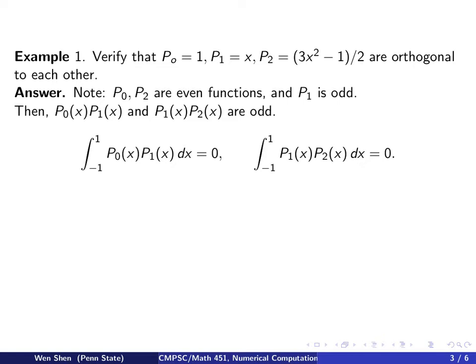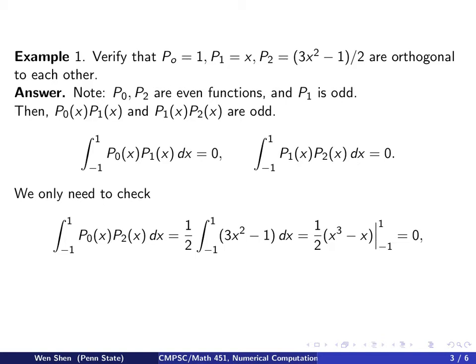then these integrals are 0, because the integral from negative 1 to 0 will equal to the 1 from 0 to 1, but with opposite signs, so they add up to be 0. So P0 and P1 are orthogonal, and so is P1 and P2. So the only one remains to be checked would be P0 and P2, that they are orthogonal to each other. This is done by a simple integration calculation. So plug in the expression for P0 and P2, we'll get, take out the half, we'll have just 3x squared minus 1. Work out the integral for this one, we get x to the third minus x, and evaluate it at negative 1 and 1. And you see this exactly gives me 0. So therefore we have verified that these three Legendre polynomials are orthogonal to each other.